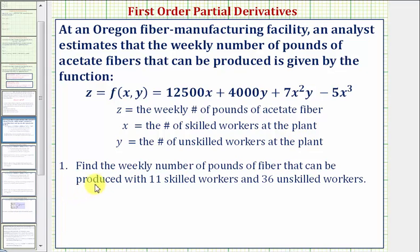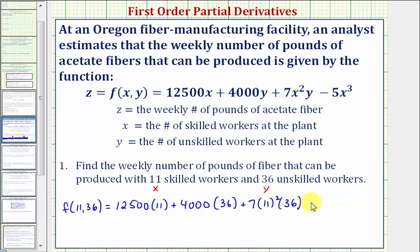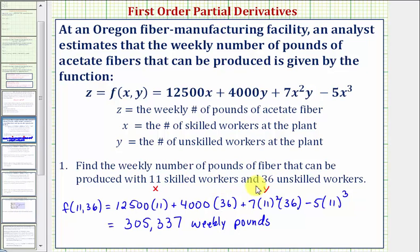The first question asks us to find the weekly number of pounds of fiber that can be produced with 11 skilled workers and 36 unskilled workers. We want to evaluate the given function when x equals 11 and y equals 36. So we'd have f of (11, 36) equals 12,500 times 11 plus 4,000 times 36 plus 7 times 11 squared times 36 minus 5 times 11 cubed. This comes out to 305,337 weekly pounds, given the plant has 11 skilled workers and 36 unskilled workers.